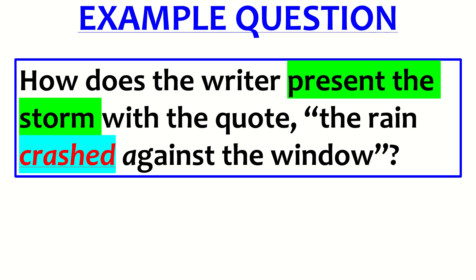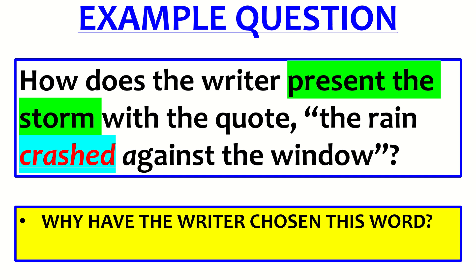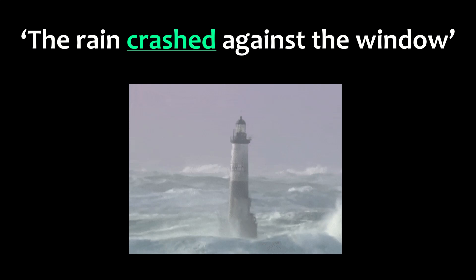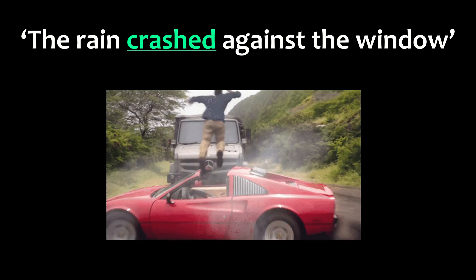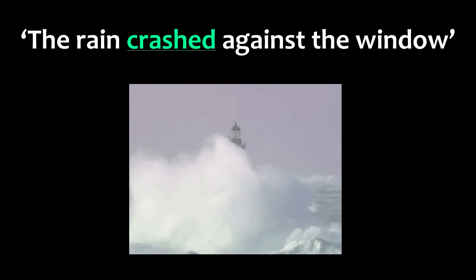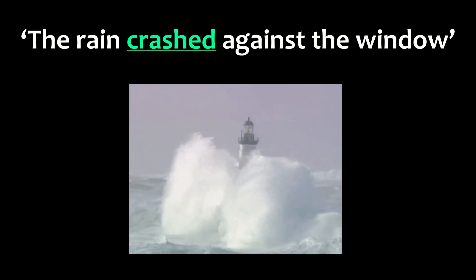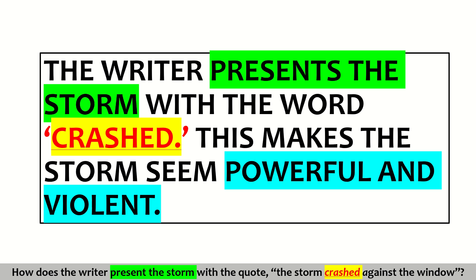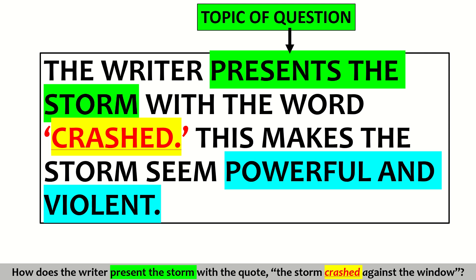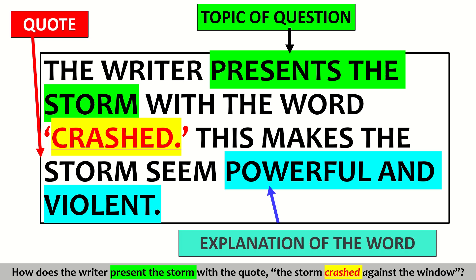Here's an example how question: 'How does the writer present the storm?' with the quote 'the rain crashed against the window.' If it said 'the rain touched the window' it's not telling us much, but 'crashed' — think of power, speed, velocity, ferocious connotations. So: 'The writer presents the storm with the word crashed. This makes the storm seem powerful and violent.' In green is the topic from the question, in red is the quote, and in blue is the explanation of the word's connotations and why the writer chose it.